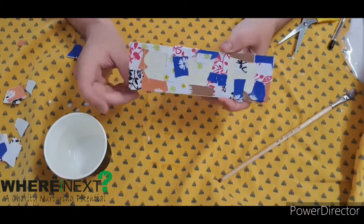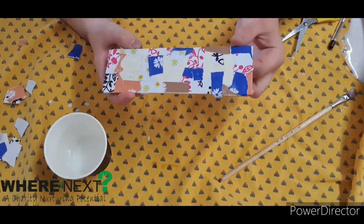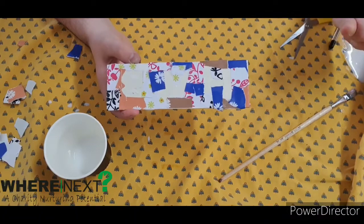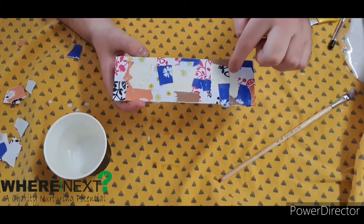So now, let yours dry for five minutes or until the glue is really dry and it's not sticky. All right then. And then we'll get on to the next step, which is going to be peeling off the tape.